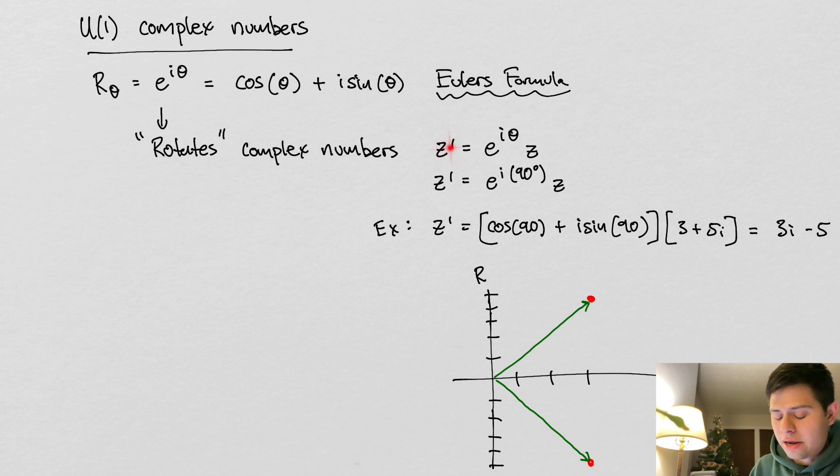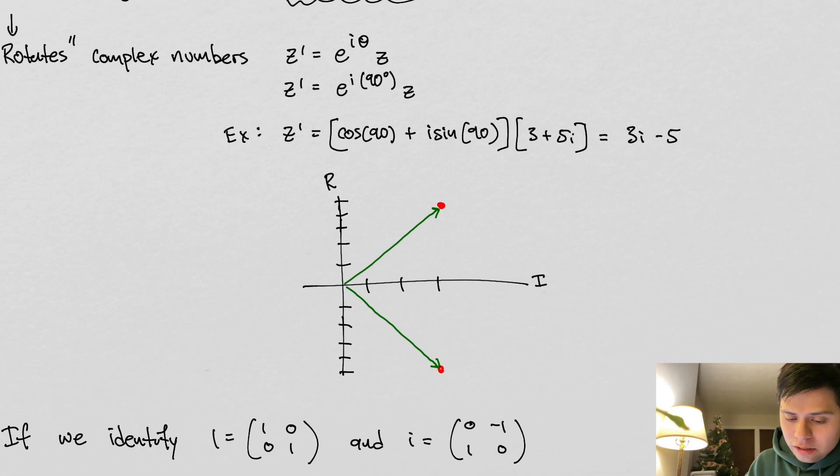In an example, z' is a new complex number which is a rotated old complex number z. When you multiply it by e^(iθ), you get z'. Say I'm rotating 90 degrees. My number is 3+5i. If I rotate this 90 degrees, I put 90 in here: this gives me -1 and this gives me 1, so I get 3i - 5. The 90 degree rotation is right here.